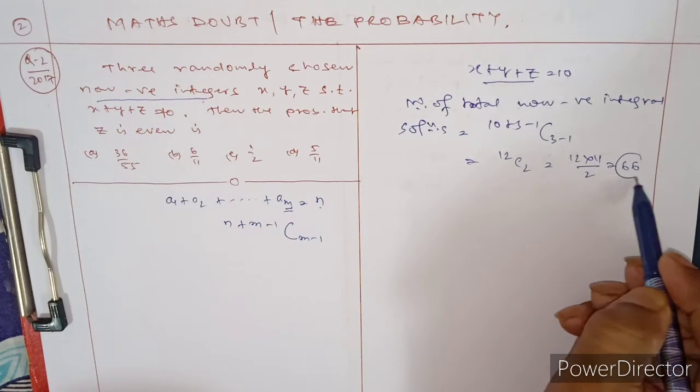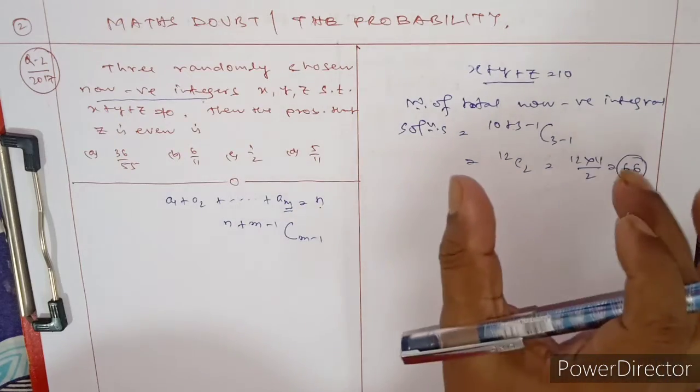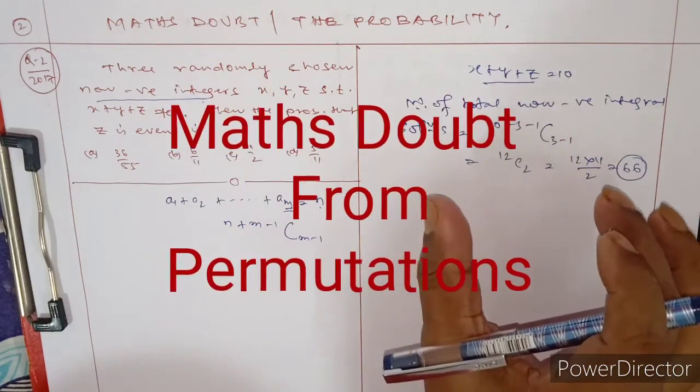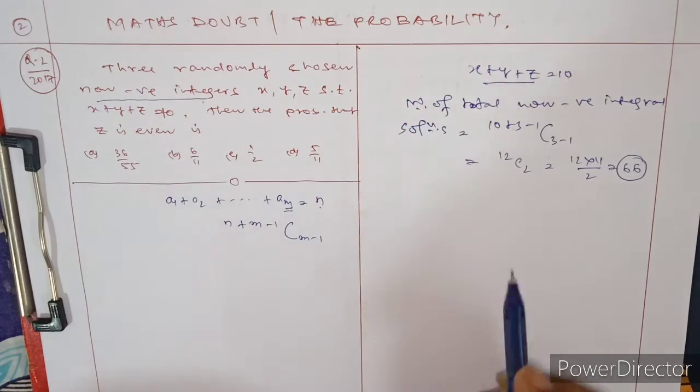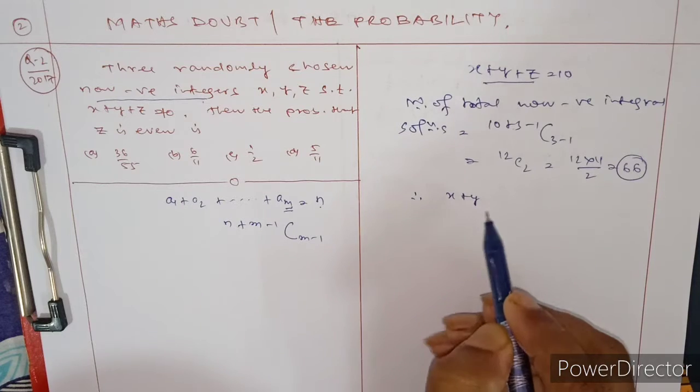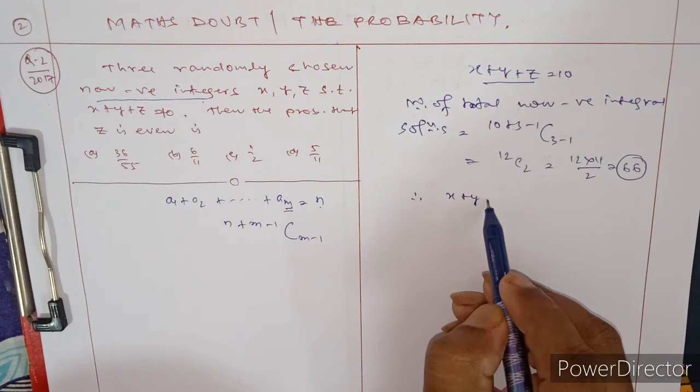Now you need to find favorable cases where z is even. Here for x + y, let's consider z as 2m, so x + y + 2m = 10.